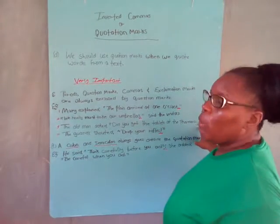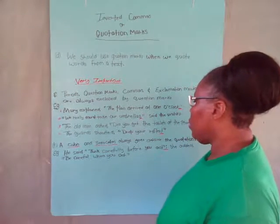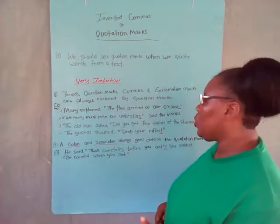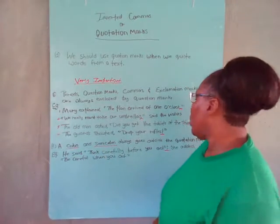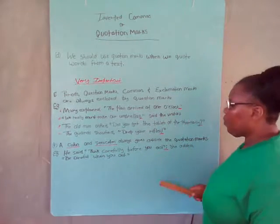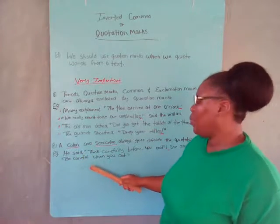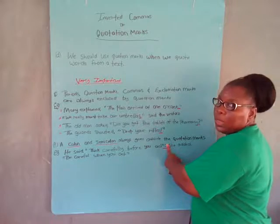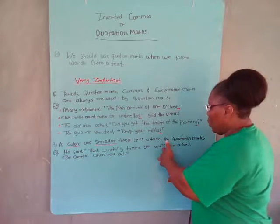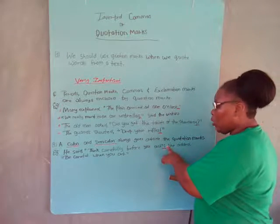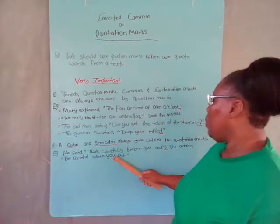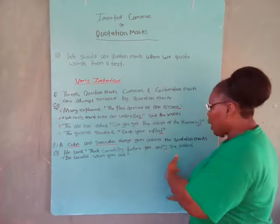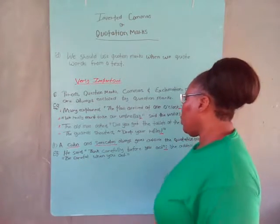So the full stop, the comma, the exclamation mark, and the question mark should all be inside the quotation mark. However, a colon and a semicolon always go on the outside of the quotation mark. For example: he said, "Think carefully before you act"; she added, "Be careful when you act." Here the semicolon is outside of the quotation mark, joining the sentences together.